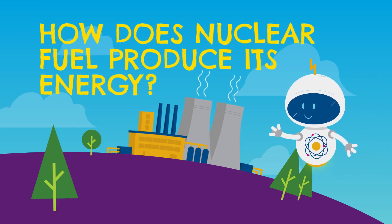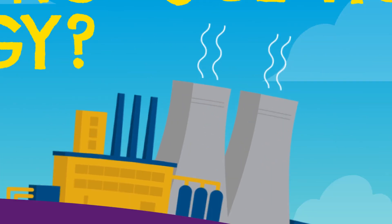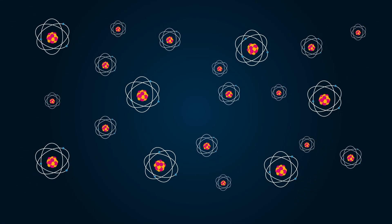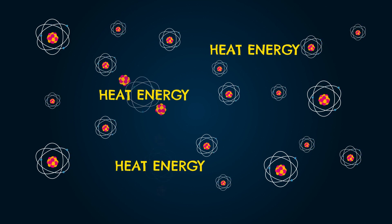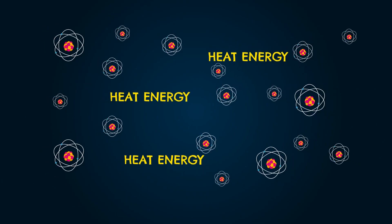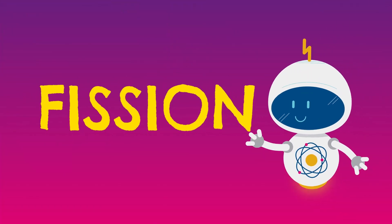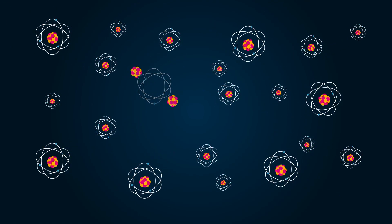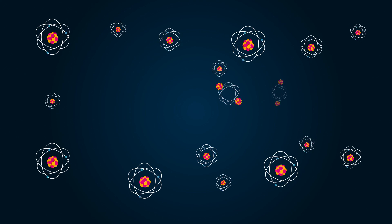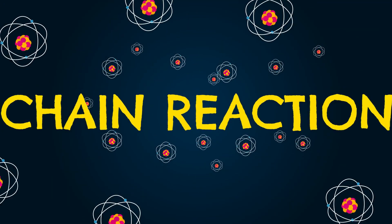But how does nuclear fuel produce its energy? It contains millions of tiny atoms. When those atoms are split, heat energy forms. This activity is called fission. The newly split atoms bump into other atoms, causing them to split too. This is called a chain reaction.